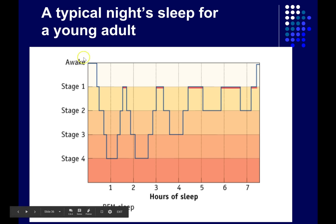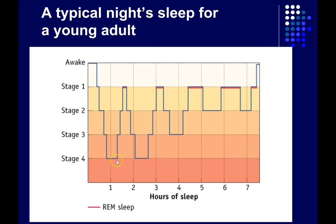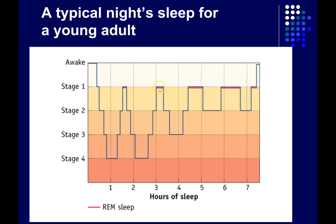This is showing you a typical night's sleep for a young adult. We start off awake, then move into stage 1, stage 2, 3, 4, and then back into stage 3, 2, and instead of re-entering stage 1, we enter REM sleep — indicated by the red line. The overall pattern: early on in the night, spending a lot of time in stages 3 and 4 slow-wave sleep; later on in the night, spending more time in REM. The duration of the REM cycles increases while slow-wave sleep decreases until it often goes away completely.